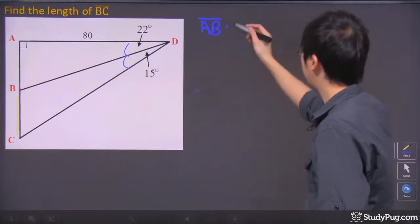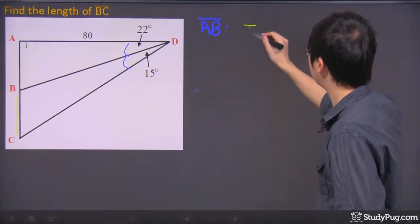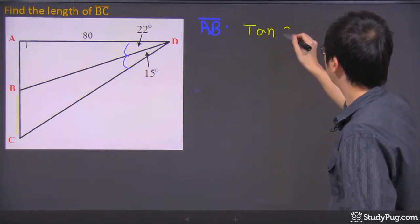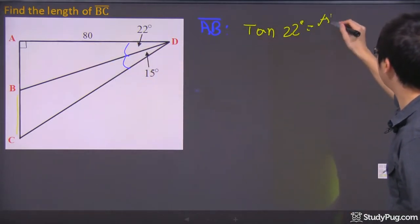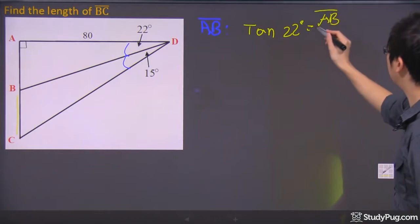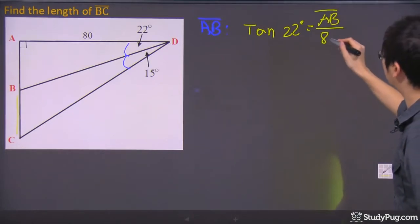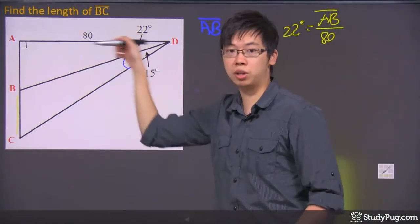So you're going to use tangent. So for the length A to B, I'll be using tangent 22 degrees, and the opposite would be the one I'm looking for, which is A to B, the length A to B, divided by the 80, which is the adjacent, which is over here.